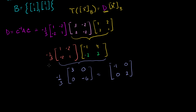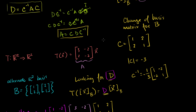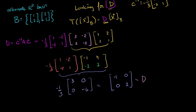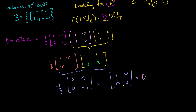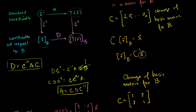So D equals [[-1, 0], [0, 2]] — this is now our transformation matrix with respect to the basis B. We were able to figure it out just by applying the formula D equals C inverse A C. In the next video, we'll actually verify this by taking some vectors x, applying the transformation, converting coordinates, and showing it's equivalent to multiplying by A.